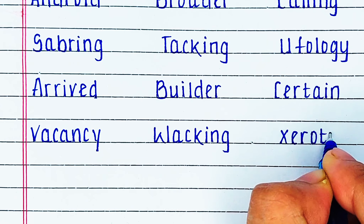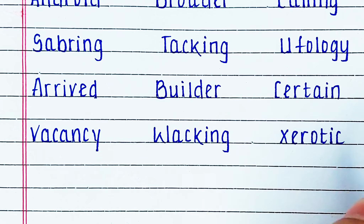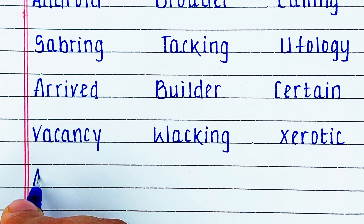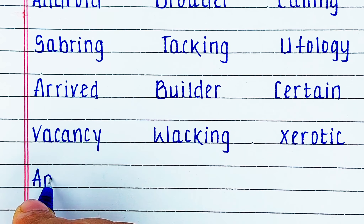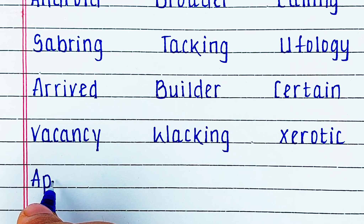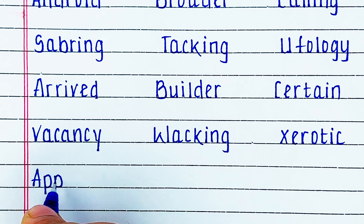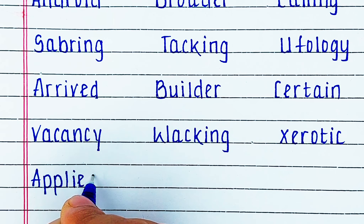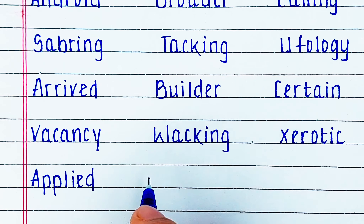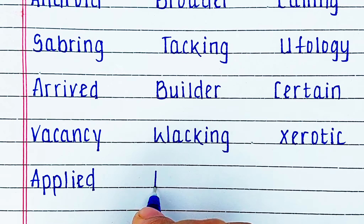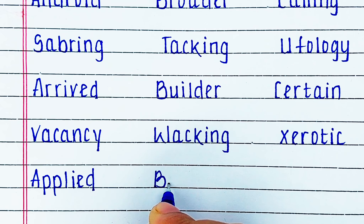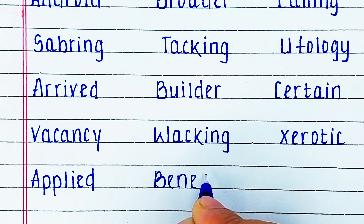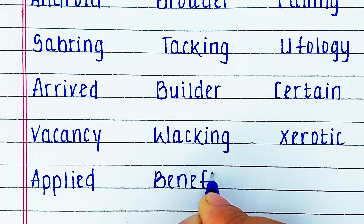Next is Alphabet X. The word is X E R O T I C, zerotic. Next word is A P P L I E D, applied. Next word is B E N E F I T, benefit.